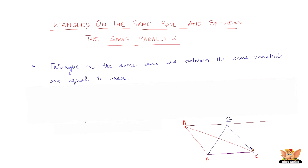Let this triangle be A, B, and C, and let the blue triangle be E, B, and C. So triangle EBC and triangle ABC are completely different to look at, but they lie on the same base and between two parallel lines — lines that are not going to meet each other. When this condition is in place, the areas of these two triangles are going to be equal. That is what the first property says.